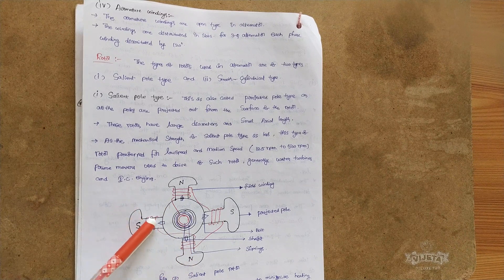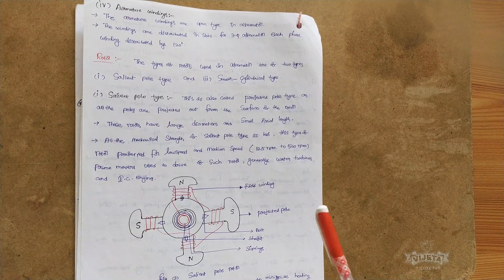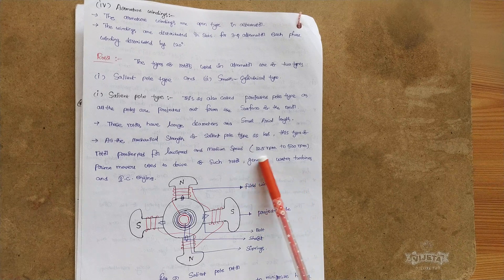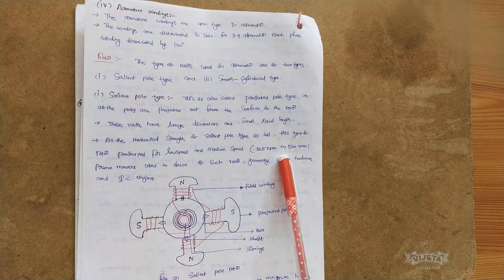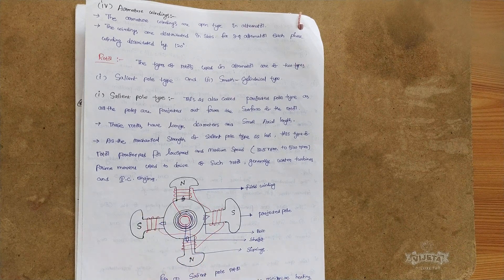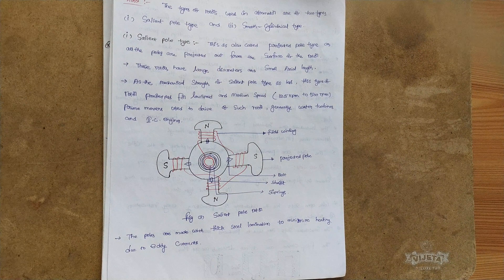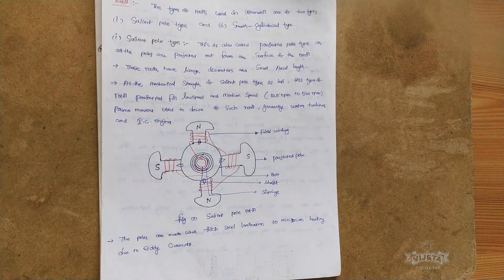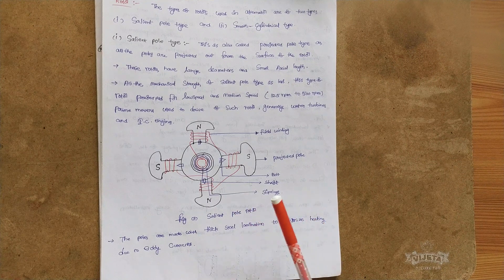The mechanical strength of the salient pole type is relatively less because the poles are projected out using bolts and nuts. Salient pole type rotors are used only for medium speed applications - from 125 RPM to 750 RPM. The prime mover used is a medium or low speed type. For water turbines, hydro power plants, and IC engines, salient pole type rotors are used because turbine speed is low. For low speed applications, such as Pelton wheels and Kaplan turbines, salient pole rotors are preferred.